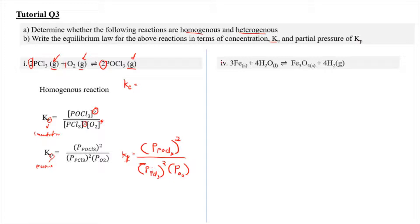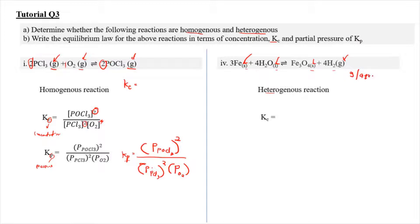Now for the second equation: 3 iron solids reacting with water to produce Fe₃O₄ with hydrogen gas. This reaction involves various states of matter — solid, liquid, solid, and gas — so it is a heterogeneous reaction. For Kc, we only include gas and aqueous states. Pure solid and liquid are not included in Kp or Kc expressions.